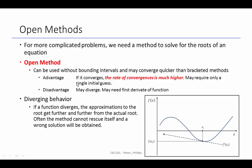The advantages here are that if it converges, the rate of convergence is typically much higher than a bracketed method, and it may only require a single initial guess. The disadvantages are that the method may diverge, and we may need the first derivative of the function.